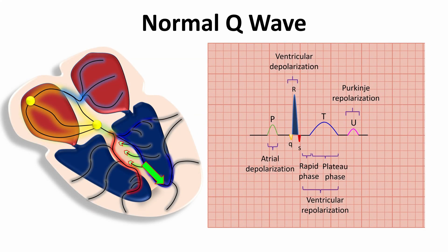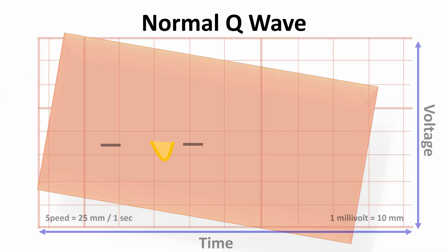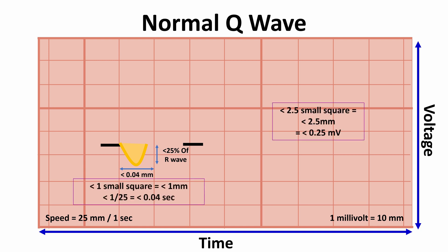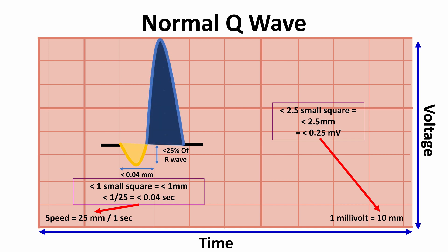A physiological Q wave meets the following criteria. First, it must be less than 0.04 second in width, or less than one small square, or less than one millimeter when ECG grid speed is 25 mm per second. Second, the Q wave must be 2.5 small squares in length or smaller, which is less than 2.5 mm, or less than 2.5 millivolts, when the ECG grid is set so that 1 mV equals 10 mm — that equals 10 small squares. In some books, the Q wave must be less than 25 percent of the R wave.